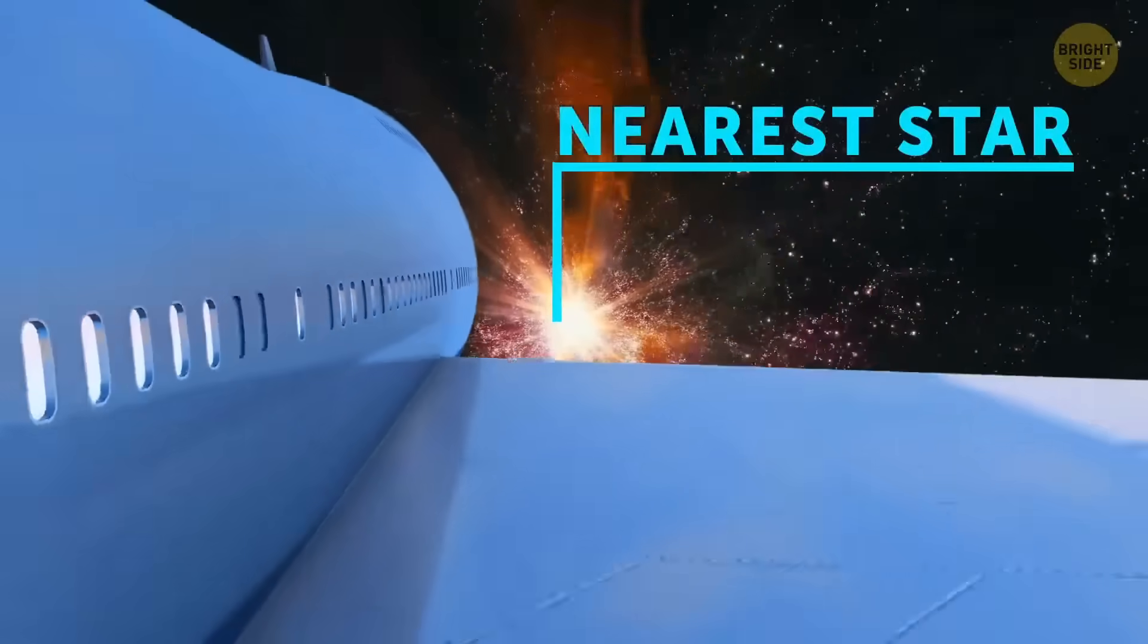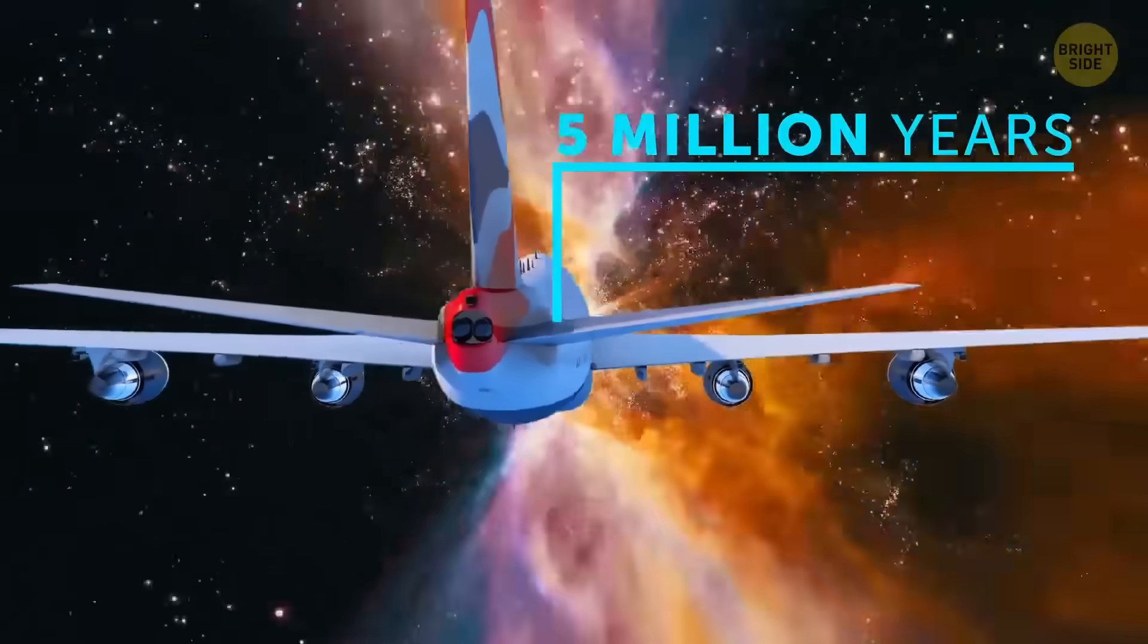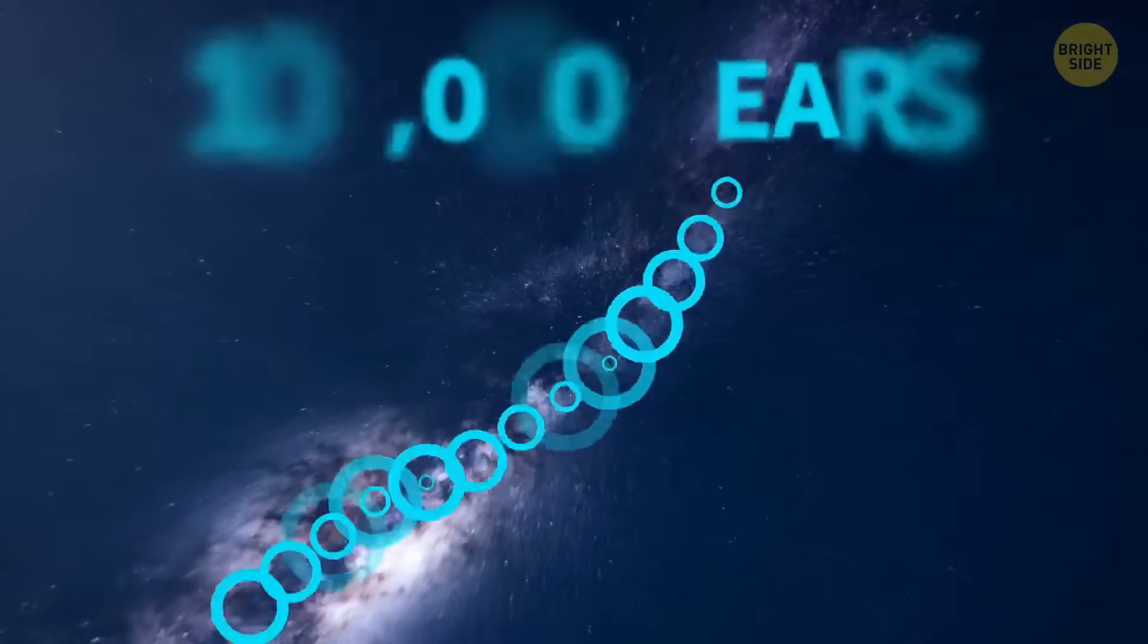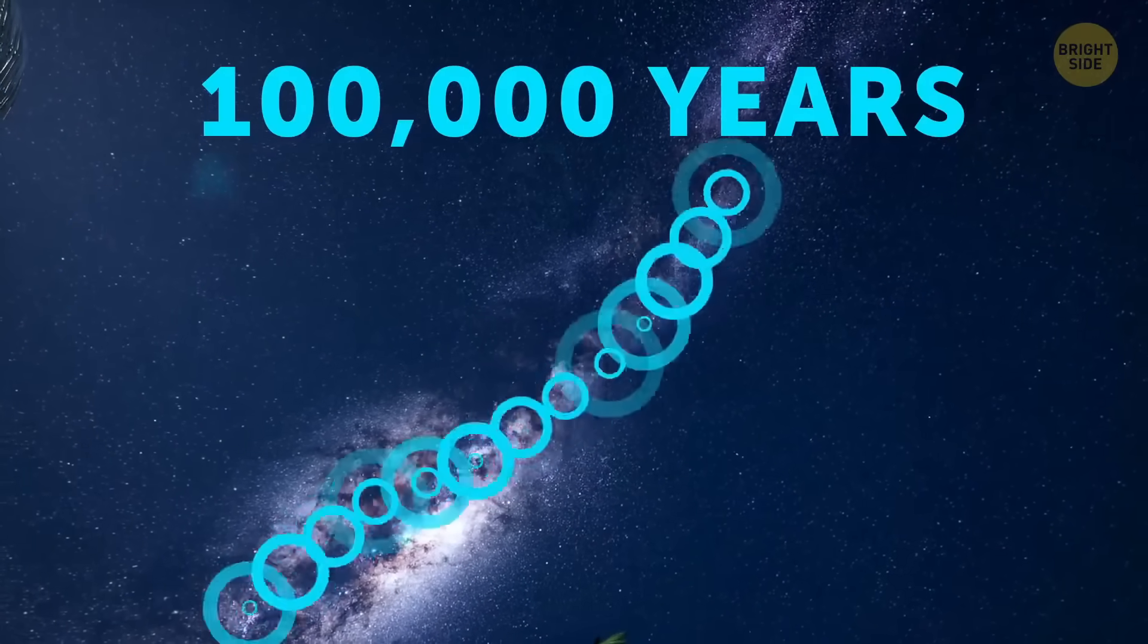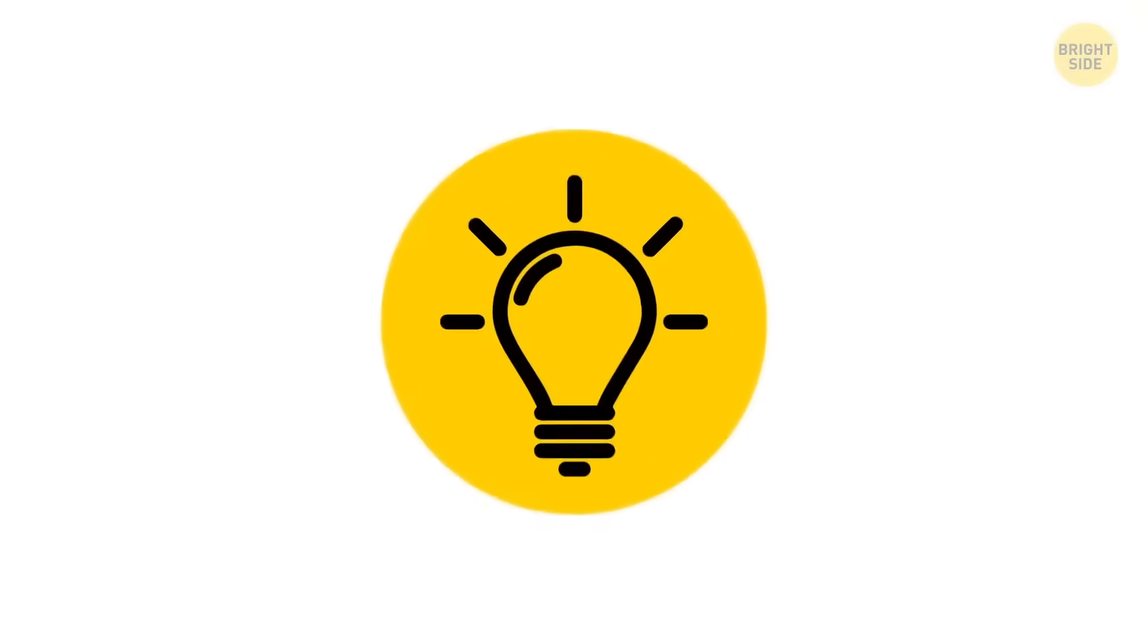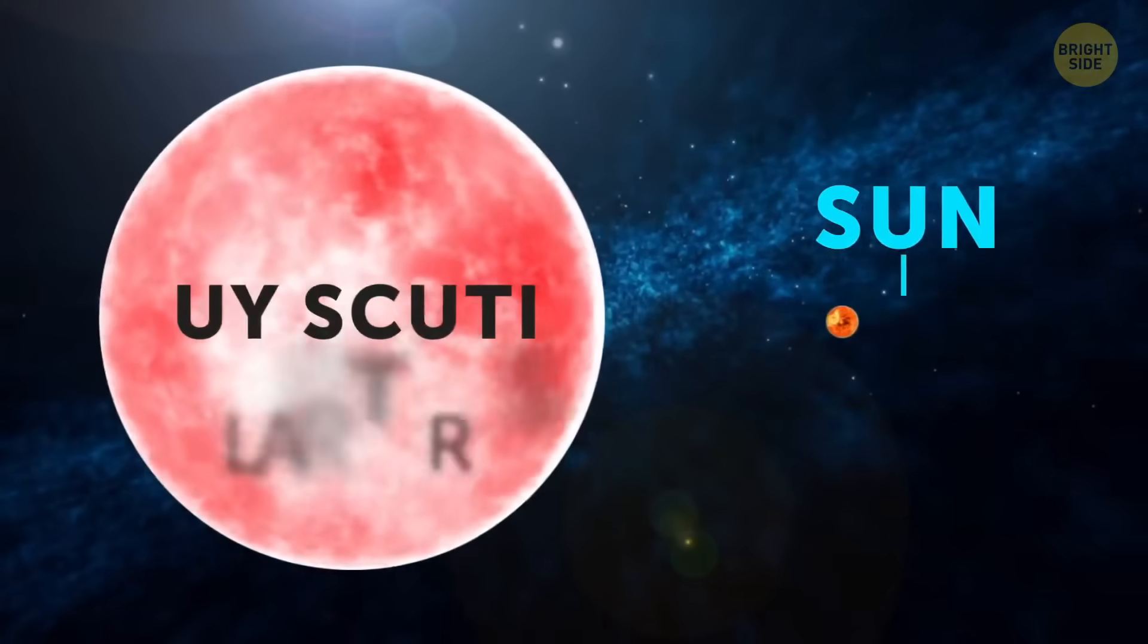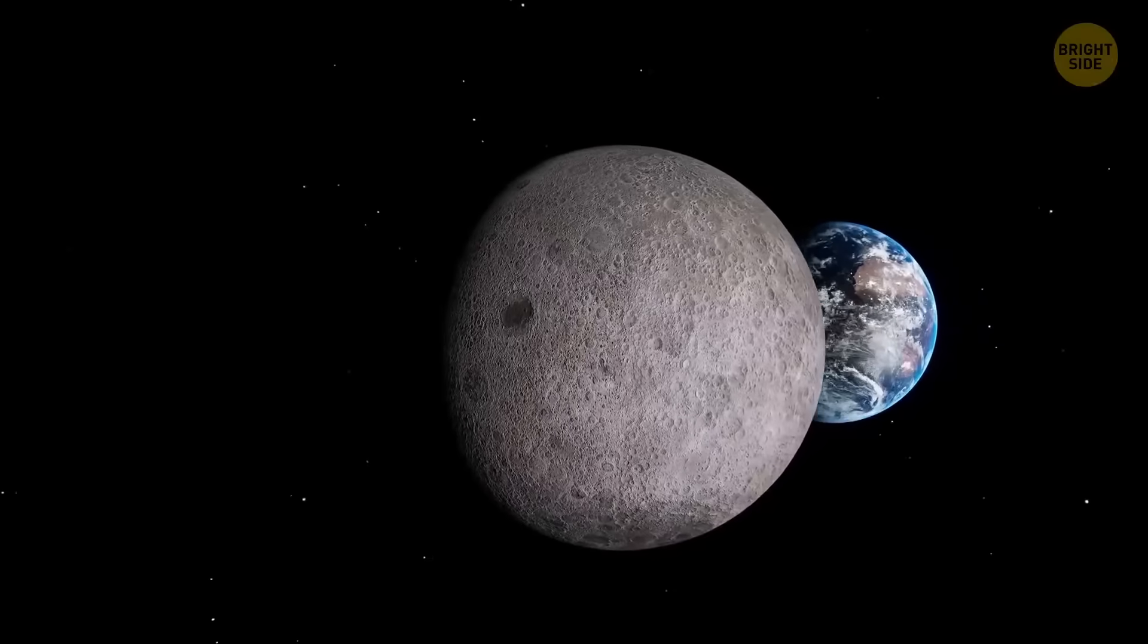A trip to the nearest star apart from the Sun would take you 5 million years on a commercial airplane. That's what I call a long-haul flight. It would take you about 100,000 years to travel from one end of our Milky Way galaxy to the other at the speed of light. On a plane, that's just too many zeros to fit into a single screen. The Sun can fit about a million Earths inside it. But there's a star called UY Scuti that's about 1700 times larger than the Sun.